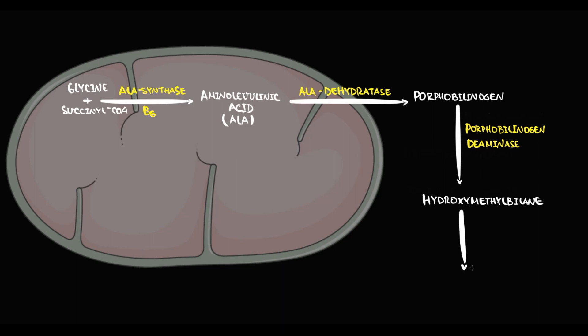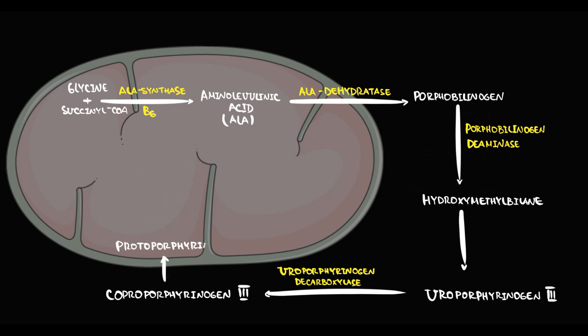Then porphobilinogen by porphobilinogen deaminase is converted into hydroxymethylbilane. Hydroxymethylbilane is converted into uroporphyrinogen, and uroporphyrinogen by uroporphyrinogen decarboxylase undergoes conversion into coproporphyrinogen. This molecule enters into the mitochondria, where it undergoes conversion into protoporphyrin. And then the specific enzyme called ferrochelatase, that uses copper as cofactor, binds iron to protoporphyrin, and this results in formation of heme. Then we bind heme to globin, and by this we produce hemoglobin.